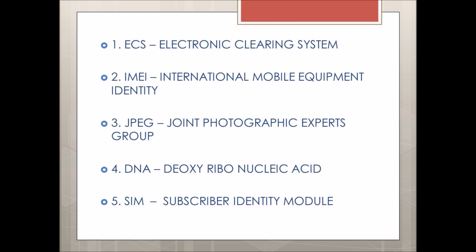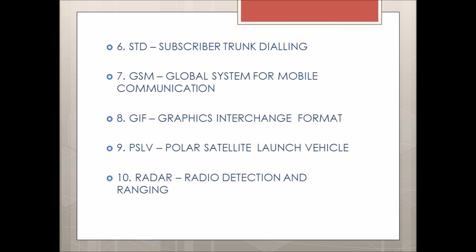First, ECS — Electronic Clearing System. Second, IMEI — International Mobile Equipment Identity. Third, JPEG — Joint Photographic Experts Group. Fourth, DNA — Deoxyribonucleic Acid. Fifth, SIM — Subscriber Identity Module. Number 6, STD — Subscriber Trunk Dialing. Number 7, GSM — Global System for Mobile Communication.